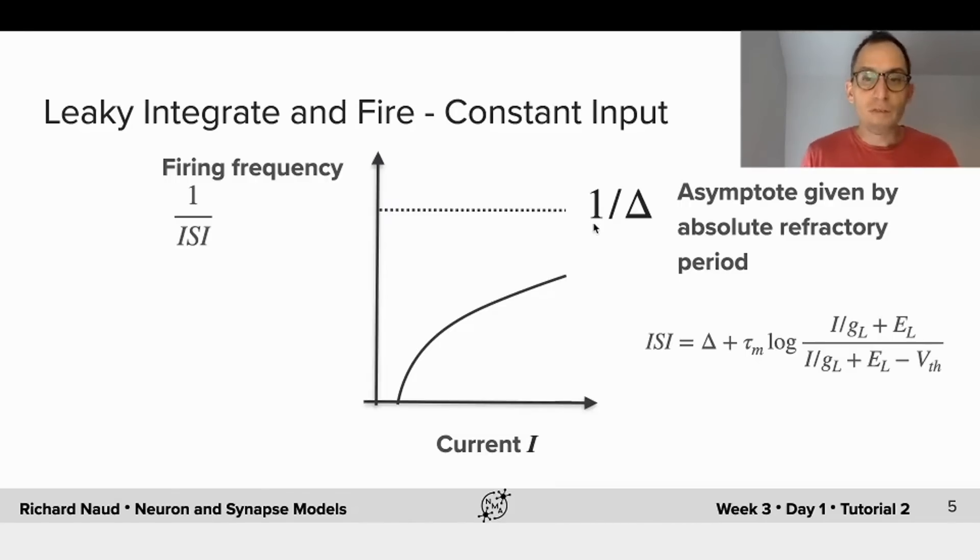The curve can be found analytically fairly easily from the equations of the Leaky Integrate and Fire model. And you see that there is a logarithm, and it depends on the parameters of the model, in particular the current and the distance to the threshold.